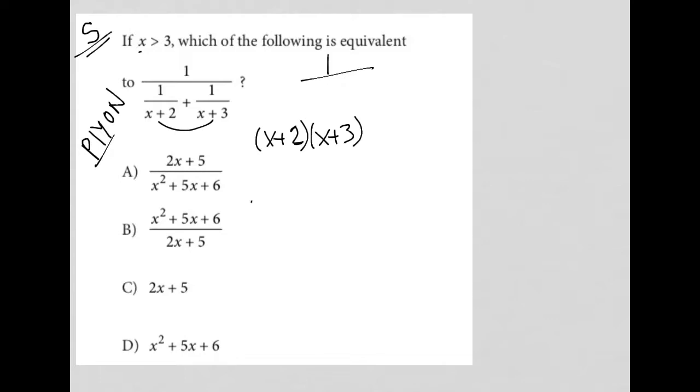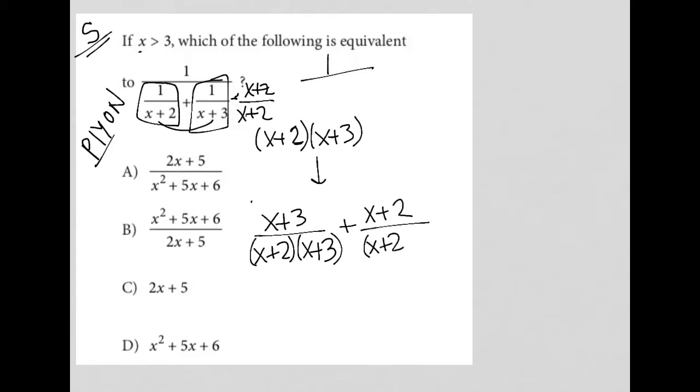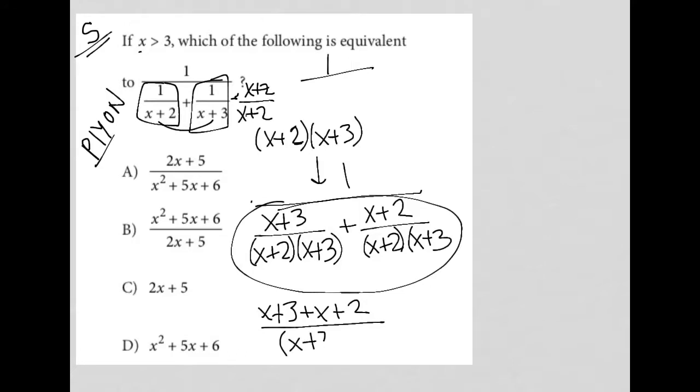Which would mean that I'd need to multiply the left fraction by x plus 3 over x plus 3. So I'd have x plus 3 over x plus 2 times x plus 3. Plus, and I multiply this fraction by x plus 2 over x plus 2. So I'd have x plus 2 over x plus 2 times x plus 3. And again, that's all under my 1. So the reason why I get a common denominator is so that I can combine these fractions together. So I'd end up with x plus 3 plus x plus 2 all over x plus 2 times x plus 3, all over 1.